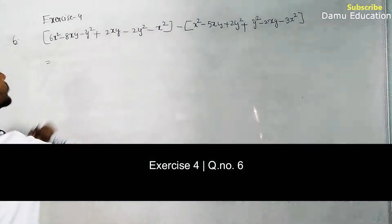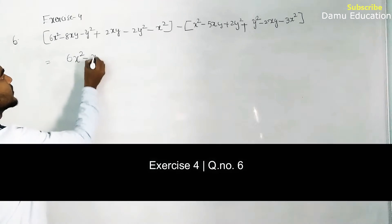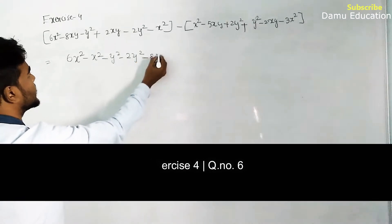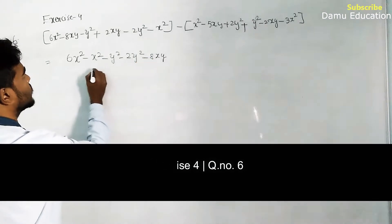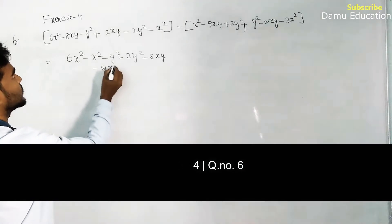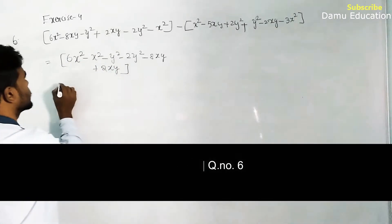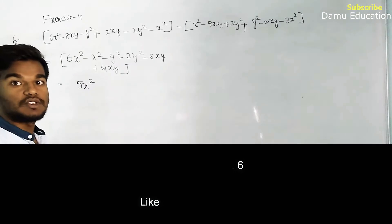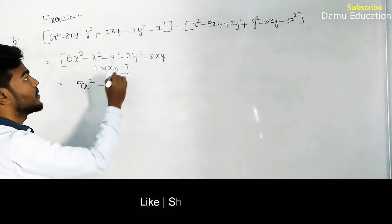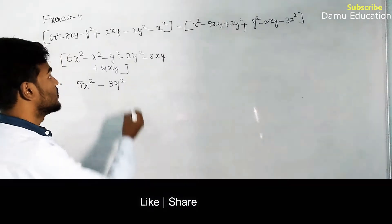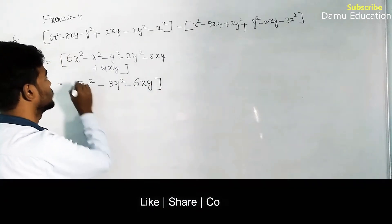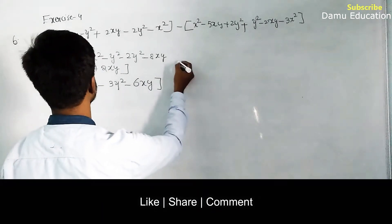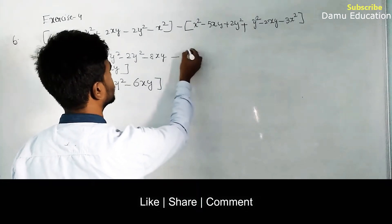We write: 6x² minus x², minus y² minus 2y², minus 8xy plus 2xy. Simplifying: 6x² minus x² becomes 5x², minus y² minus 2y² becomes minus 3y², and minus 8xy plus 2xy becomes minus 6xy. So the sum of the first two expressions is 5x² minus 3y² minus 6xy.